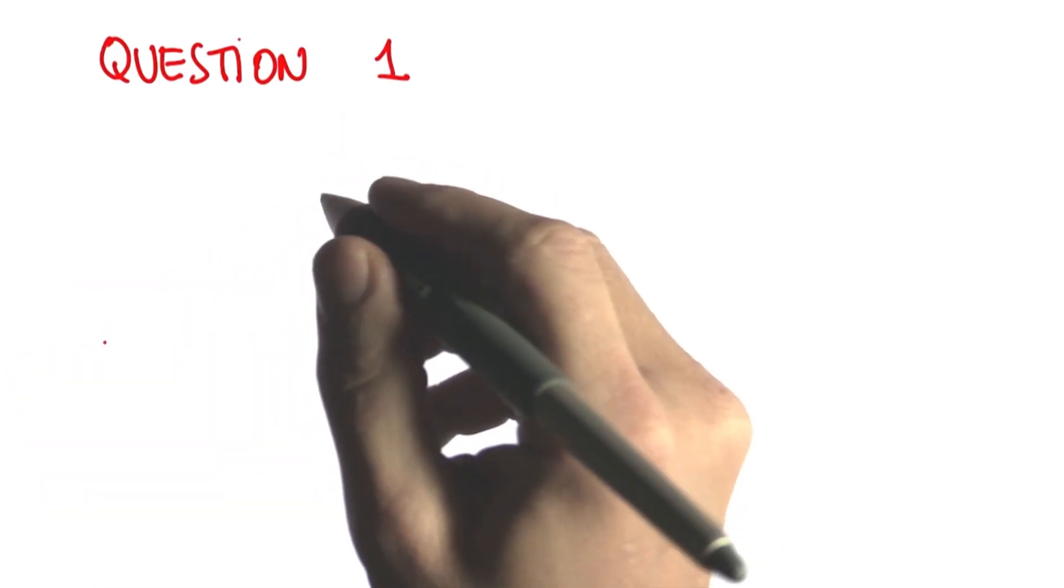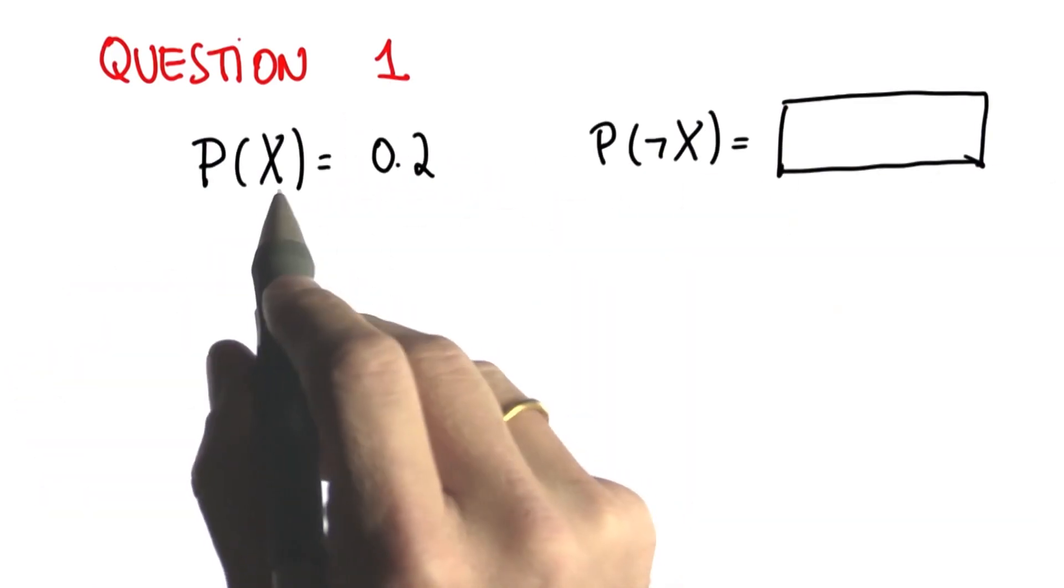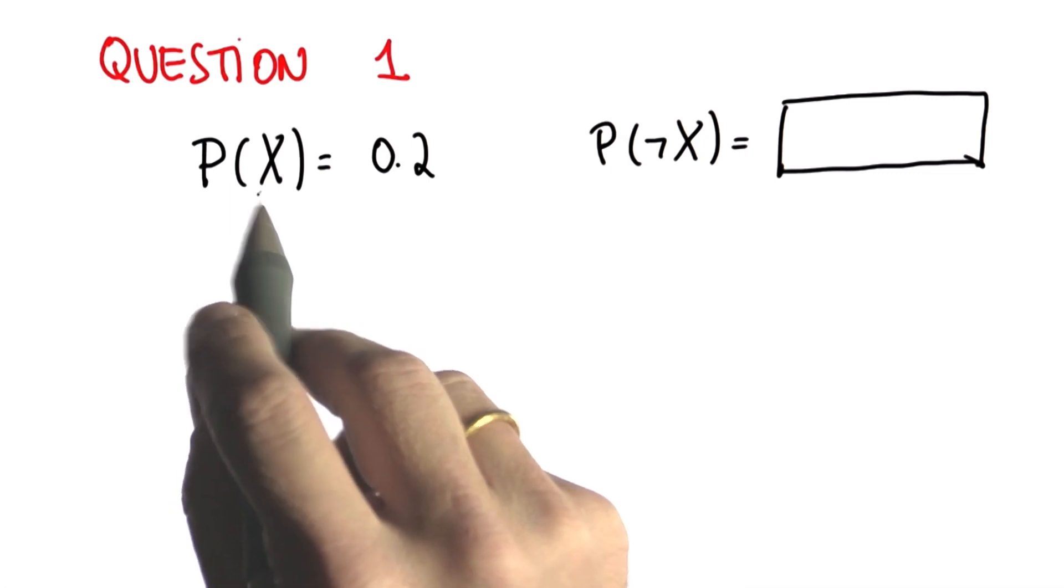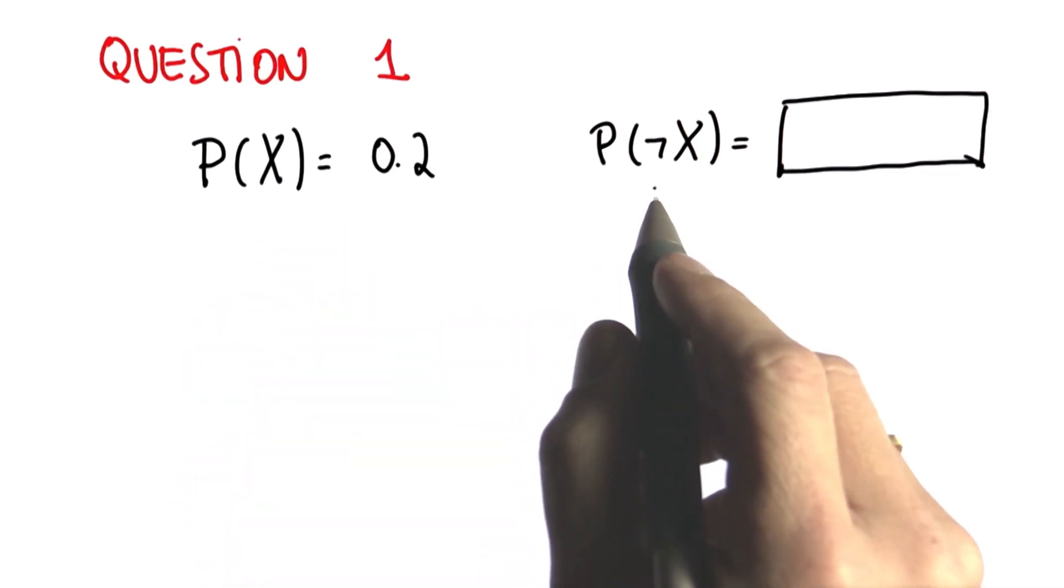In the first question, I'm going to ask you some very basic probability questions. We have a random variable X and the probability is 0.2. What's the probability of the complement?